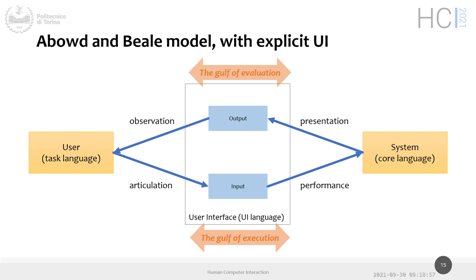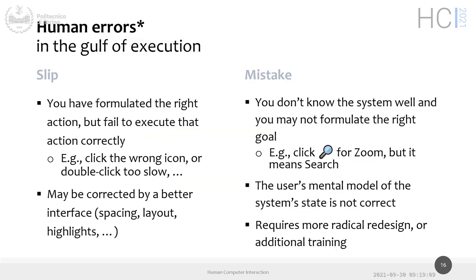We don't need to memorize these terms. The key point is that presentation and performance are what we need to program, but the real goal is to understand what the user is trying to do and — I would say — 'program the user': I want the user to think something, I want to drive what the user is thinking. There may be errors — what we call human errors in the gulf of execution — and we can't ignore them. The user may do something wrong, and that should be part of our design.